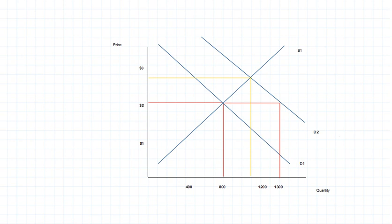So what happens? Well, at this new equilibrium, we get a price of about two dollars and 75 cents, and we get an equilibrium quantity of about 1100.